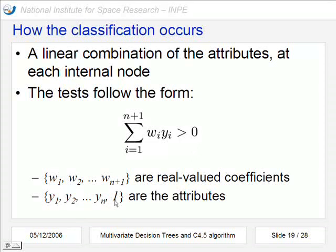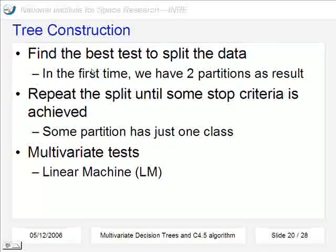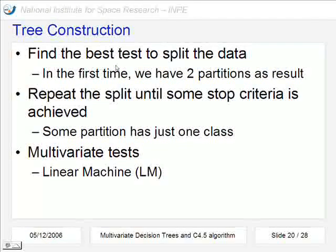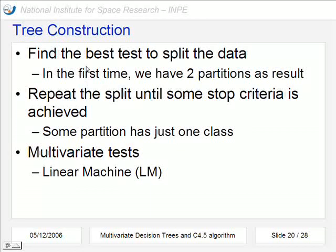When we construct the tree we have to find at the beginning the best test to split the data. We repeat this process to find more tests to split the data until some stop criteria is achieved. For example, when some partition has just one class, it's a good time to stop.